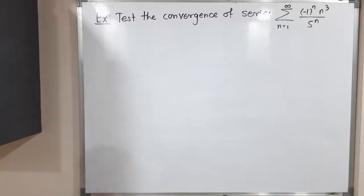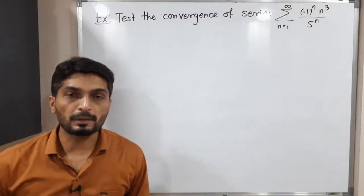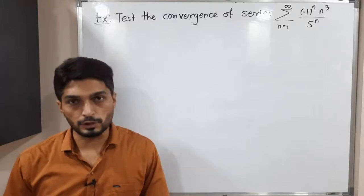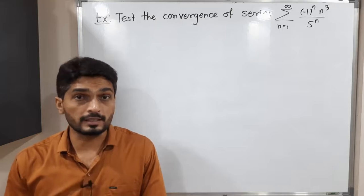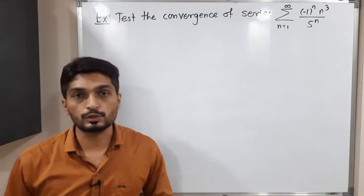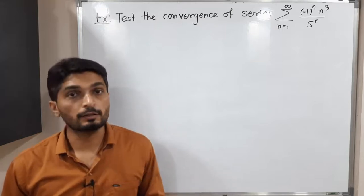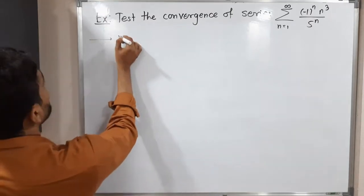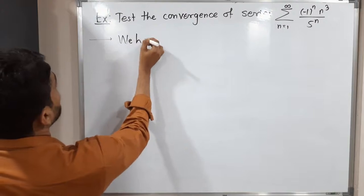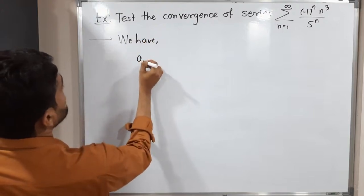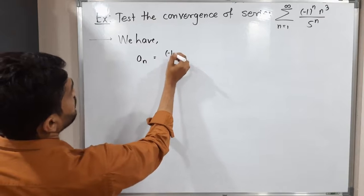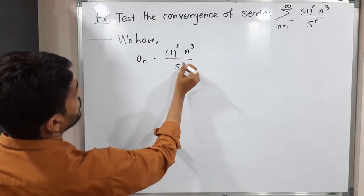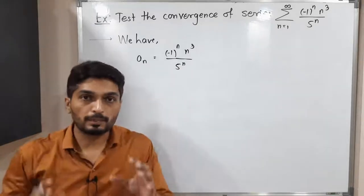Hi everyone, let us discuss this example. In this example we have a series and we have to check whether the series is convergent or divergent. So let me write n here. We have a_n — the term inside the summation — which is (-1)^n · n³ / 5^n.